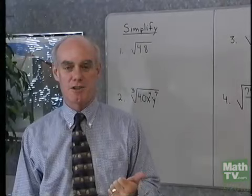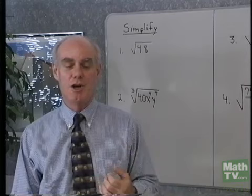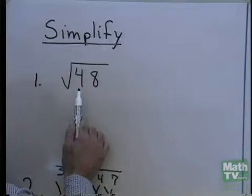Simplified form for radicals involves finding radical expressions that don't have perfect cubes as factors of what's under a cube root, or perfect squares as a factor of what's under square roots. In other words, we want to get everything we can out from under the radical. We don't want any fractions under the radical, and we don't want any radicals in the denominator. Let's look at some problems that involve writing radical expressions in simplified form.